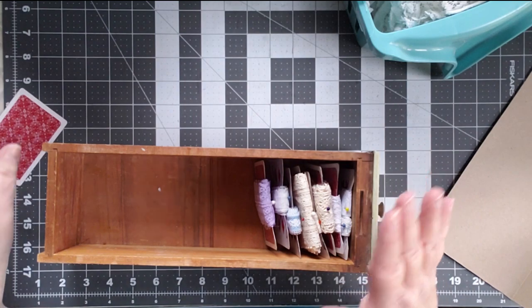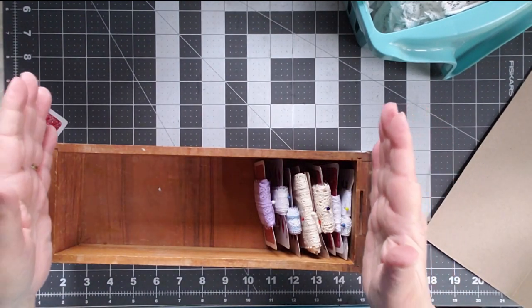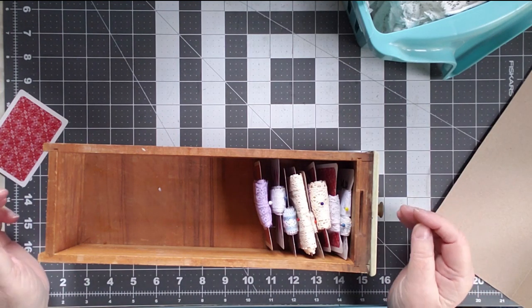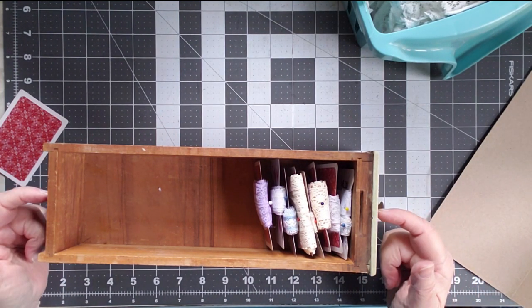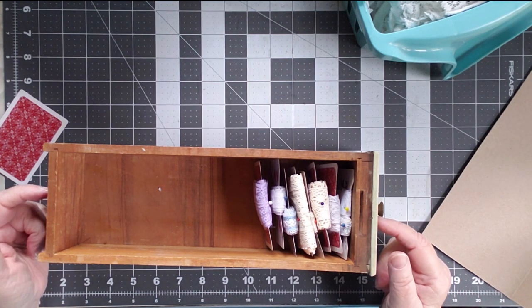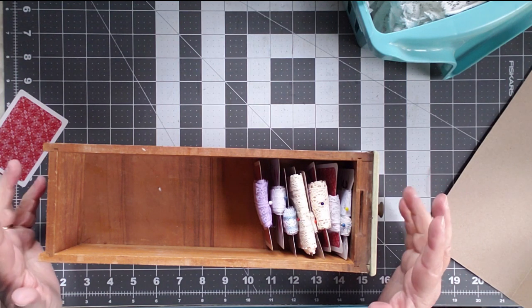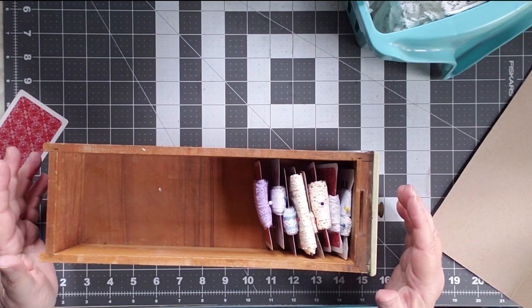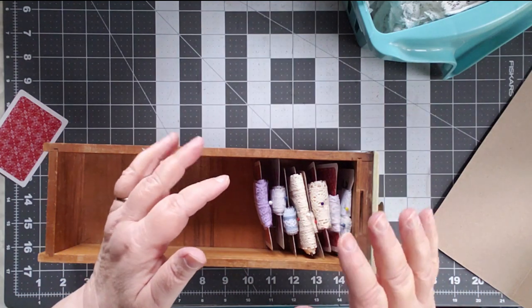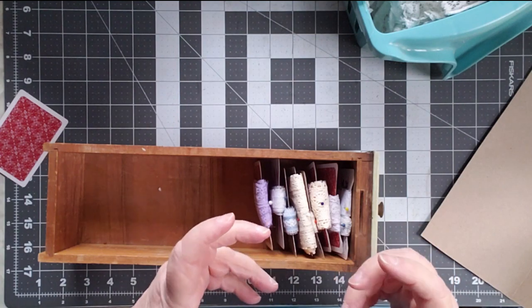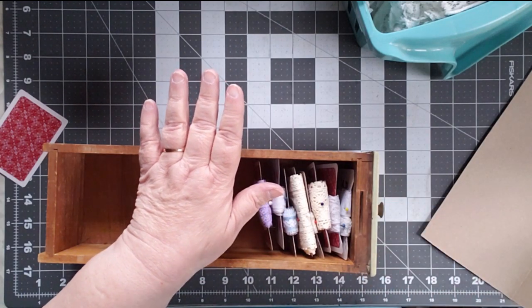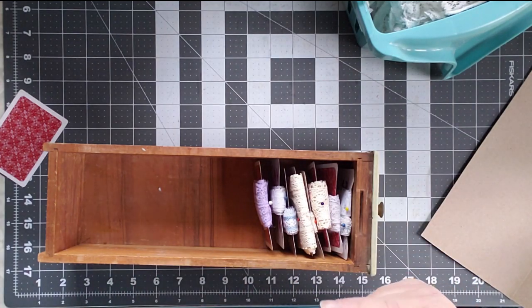Let me talk about the container for a moment before we get into the actual project. You need some way of being able to store your cards so that they can line up like this so they can be upright. This is a drawer from an old Singer sewing machine that was my husband's great aunt's. It's a really cool sewing machine and it still works if I had all of the pieces.